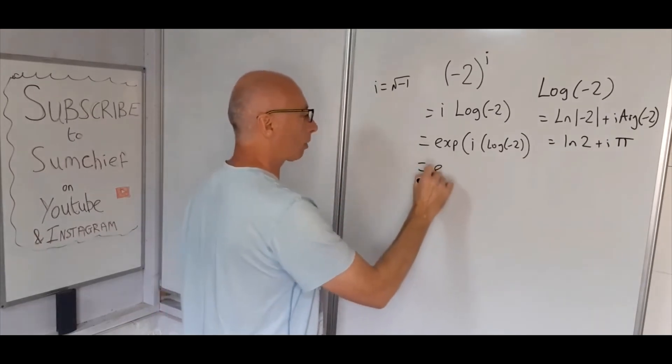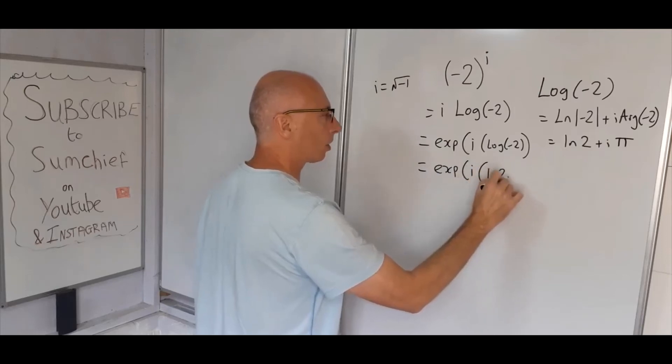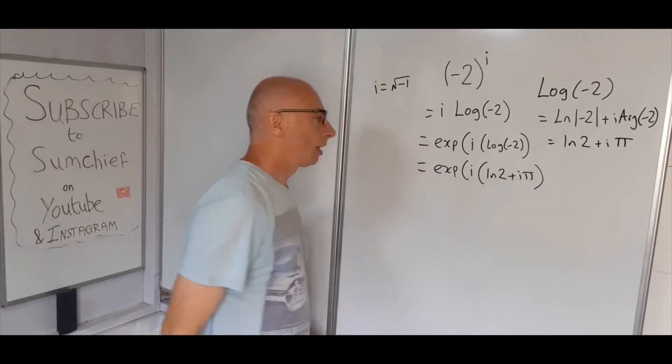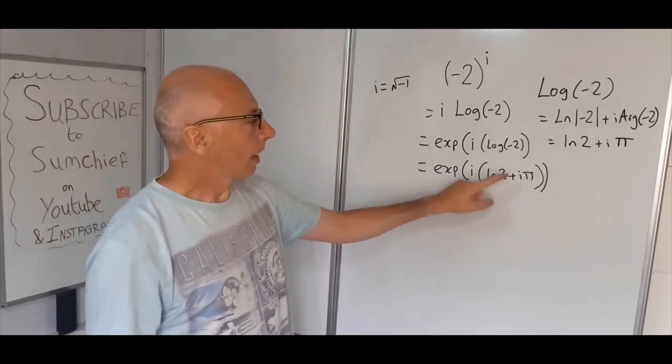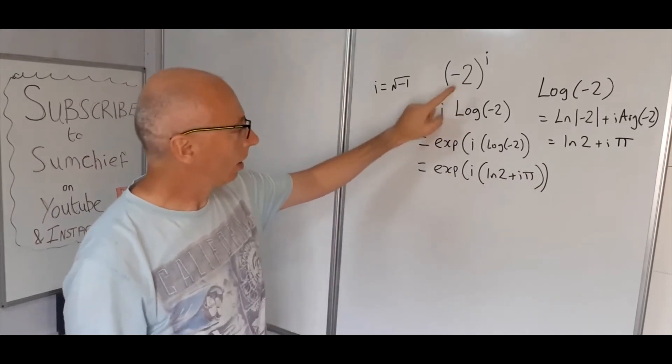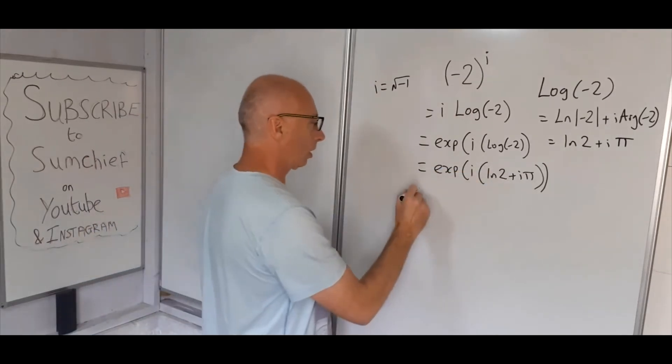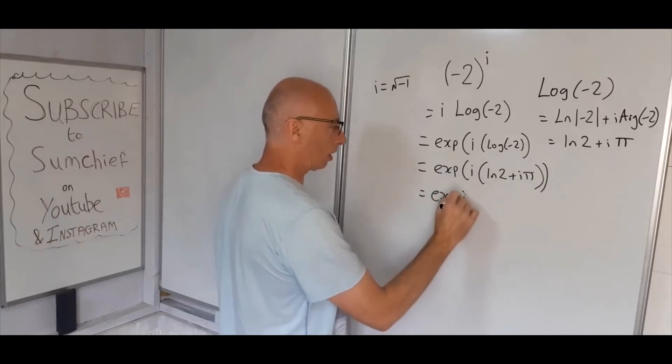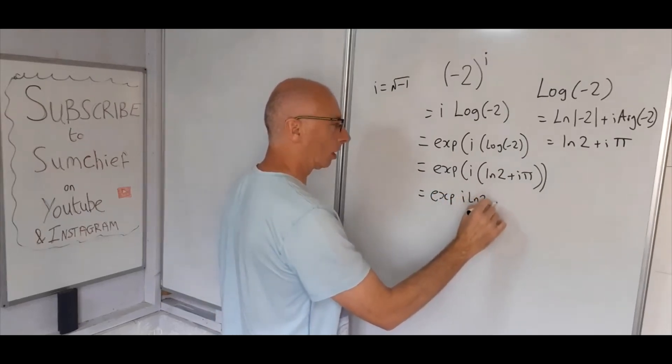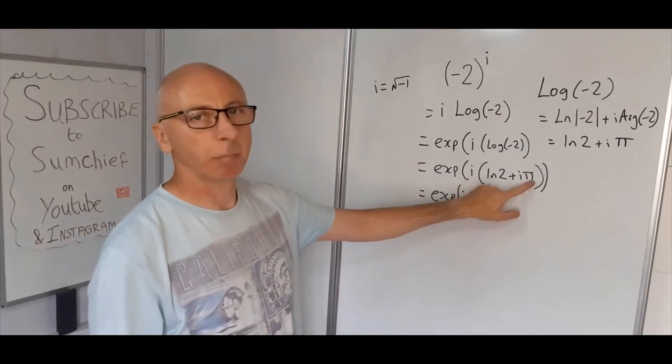So now we've got exponential i log of two plus i pi. Extra bracket. So now this is still the same as this, so we need now just algebra, just fold out the i in between each. So we've got exponential i ln two plus i i pi.